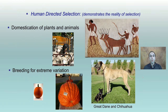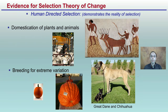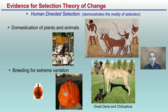We can also see this with human-directed selection through domestication of animals and plants. Sheep is an example of domesticating animals; wheat or corn would be an example of domesticating plants. We also have breeding for extreme variations — you can breed for very small pumpkins or very large pumpkins. We also have dog sizes, with the Great Dane being a very large dog and the Chihuahua being a very small dog — those extremes of the variation.